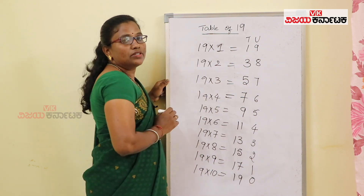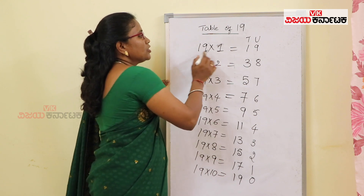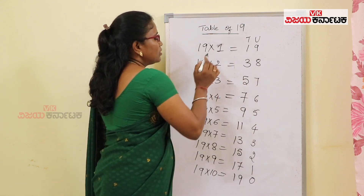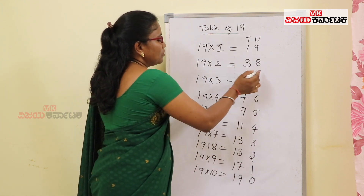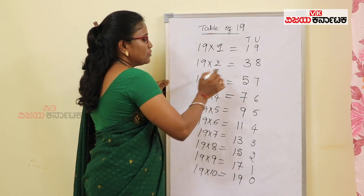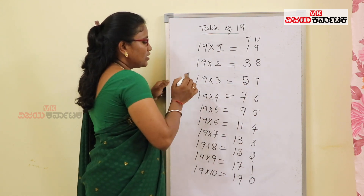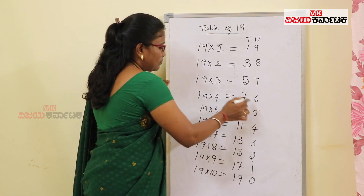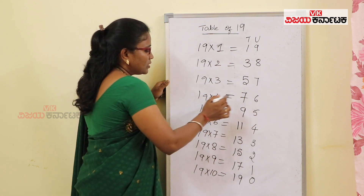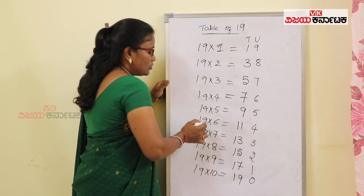So, starting from 1: 1, 3, 5, 7, 9, 11, 13, 15, 17, 19.